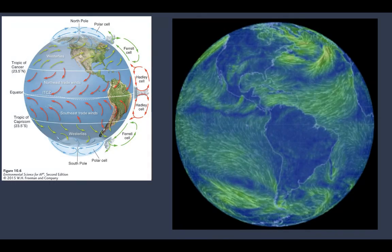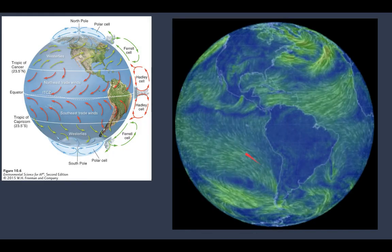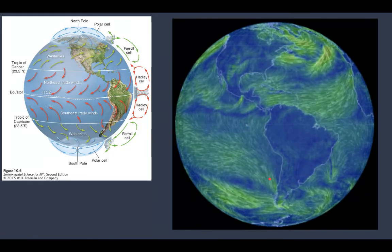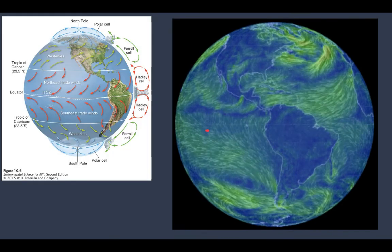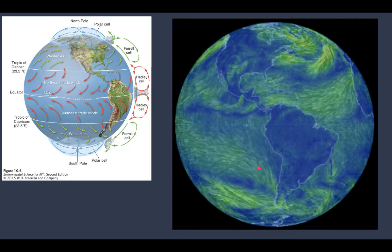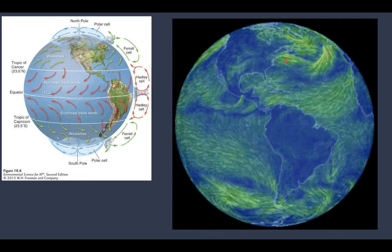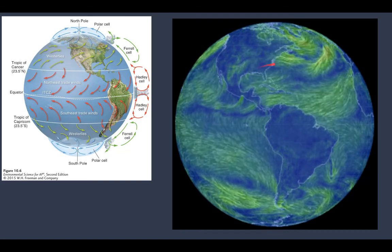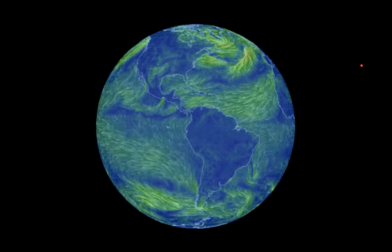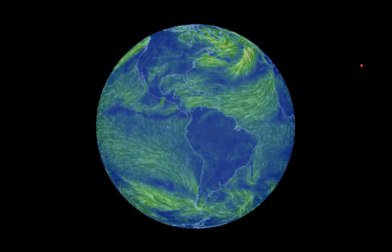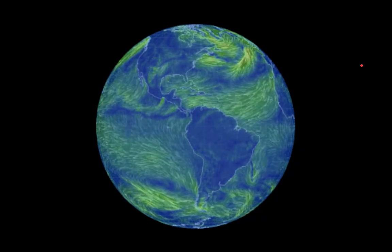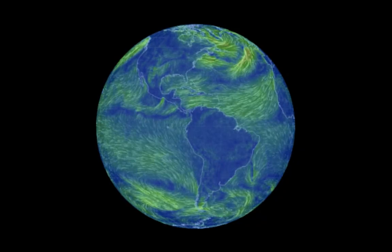And if we look at this animation here, we can see it in action. This is actual wind speeds taken. And you can see how objects in the southern hemisphere are moving to the left, objects in the northern hemisphere are moving to the right. So there's your lesson on atmospheric currents and the Coriolis effect.